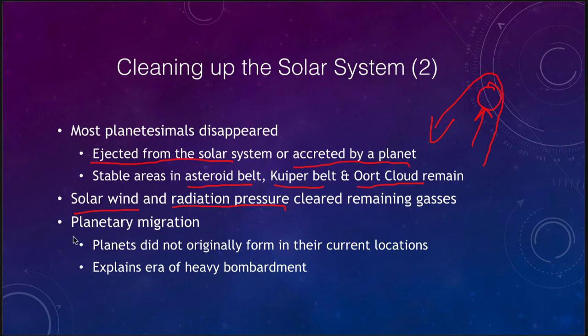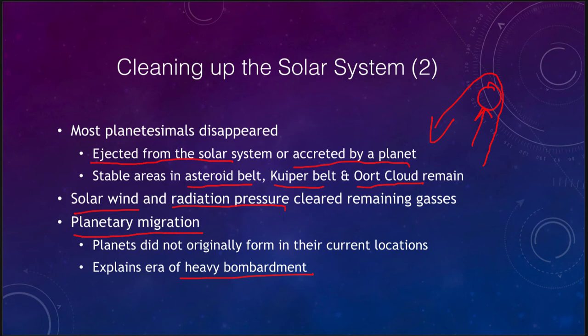One other important factor is planetary migration. We believe that the planets did not originally form in their current locations. Based on the condensation sequence, the planets have actually moved around over time before reaching the stable orbits they have today. This can possibly explain other solar systems where we observe very large planets close to their stars that would not be able to exist based on the condensation sequence. It can also explain the era of heavy bombardment — with large planets being unstable and moving around, they would fling more material into the inner solar system, perhaps causing that era of heavy bombardment that occurred early in the history of the solar system.